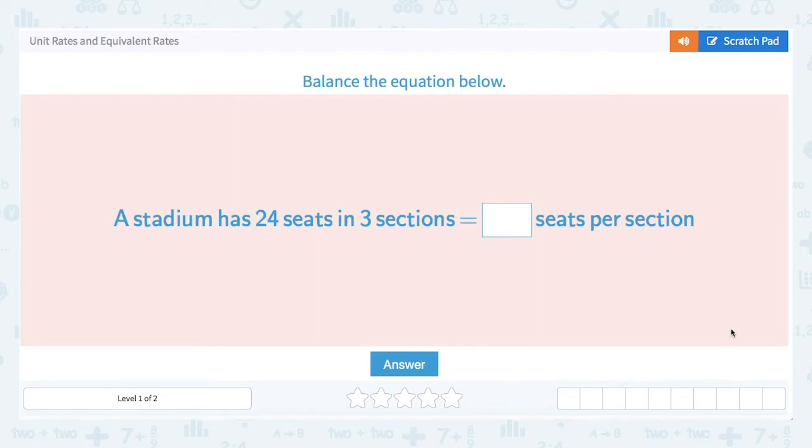The first problem we'll start with is here on your screen. A stadium has 24 seats in three sections. This equals how many seats per section?